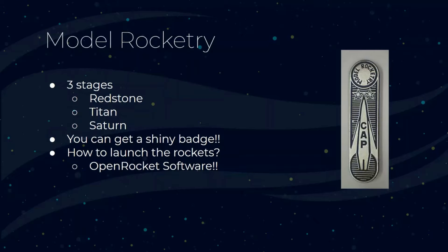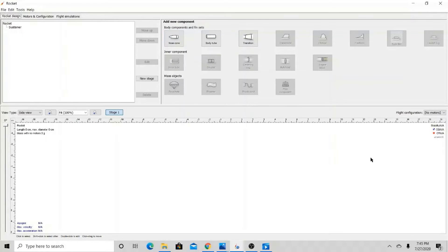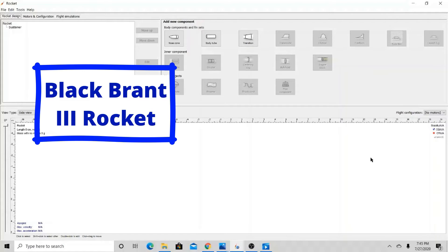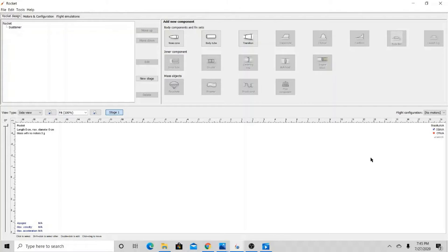The Titan and Saturn stages require you to build a rocket that needs a solid propellant to launch, and you actually need to go outside to launch it. Given the current situation, you can't do that — that's why we have the OpenRocket software. It allows you to build a rocket of any form and simulate its launch. Today, I will show you how to simulate the BlackBrand 3 rocket I ordered from Estes. You can use these instructions to simulate any other rocket.